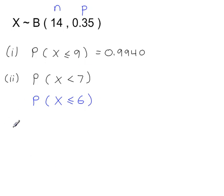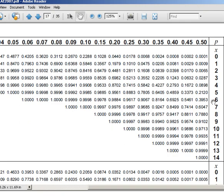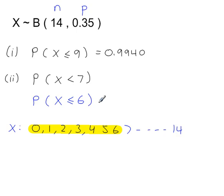If you need to, you can use the following method. X, the number of successes in 14 trials, could be 0, 1, 2, 3, 4, 5, 6, 7, all the way up to 14. We're looking for less than 7 — that's all values 0 through 6, which is the same as less than or equal to 6. Back to the tables: less than or equal to 6, at P = 0.35, gives 0.8164.